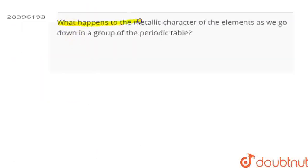The question is, what happens to the metallic character of the elements as we go down in a group of the periodic table? When you move down the group of the periodic table, you have to tell this.